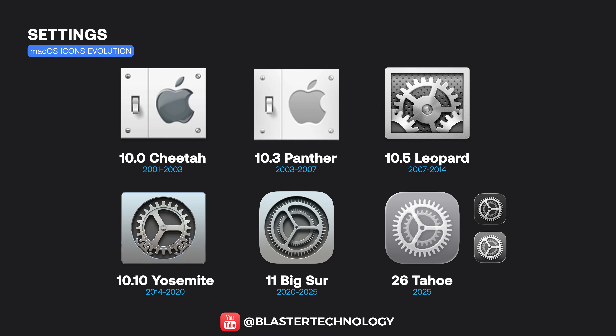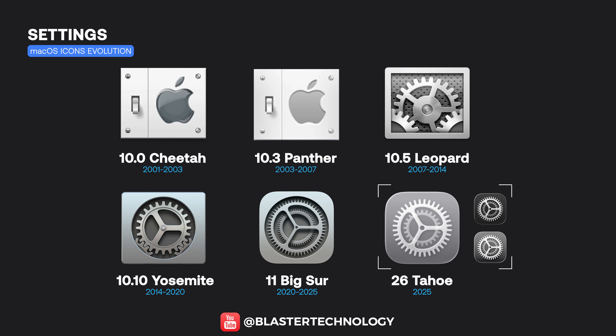The Settings icon evolved from a hardware-style control panel with a mechanical look to highly detailed metal gears. Starting with Big Sur, it was simplified and standardized, eventually reaching today's clean and flat design.